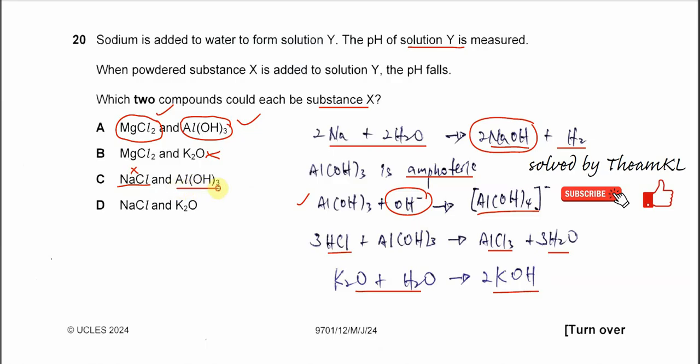C also cannot be the answer because it asks for two compounds that could each be substance X. For D, sodium chloride again, it cannot be, and of course it cannot be this potassium oxide as I told you just now. So the answer therefore is A.